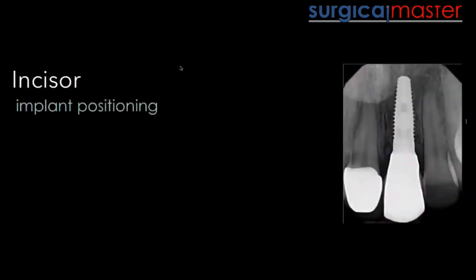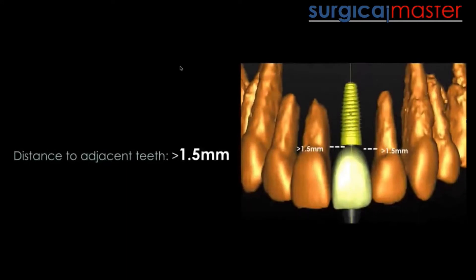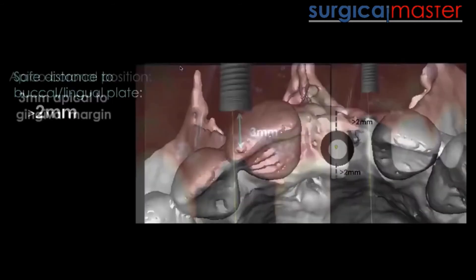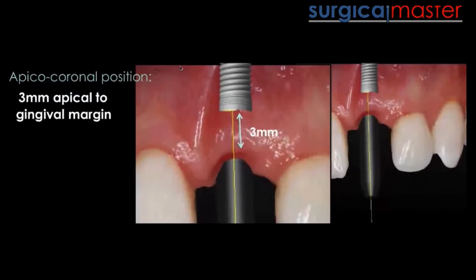When it comes to the aesthetic zone, it's even more critical. The 1.5 millimeter rule is still the same, but you don't have as much leeway compared to a molar. If you're replacing a lateral incisor that has six millimeters of bone, you immediately run out of space. Many times for lateral incisors, we actually have to go closer than 1.5 millimeters — unless we use a three millimeter diameter implant. The buccal bone also has to be at least two millimeters for stability.